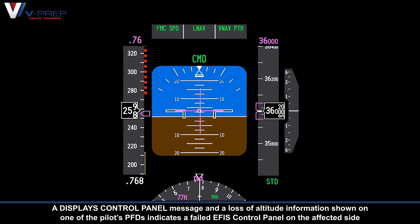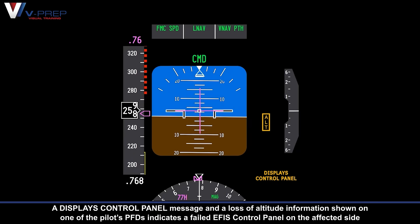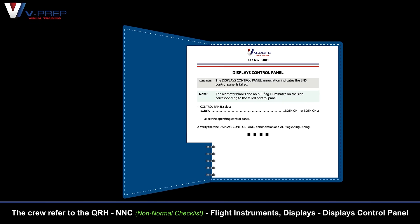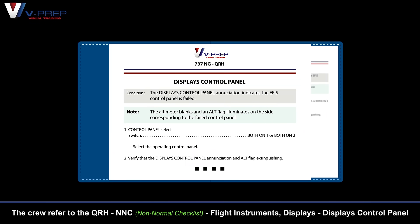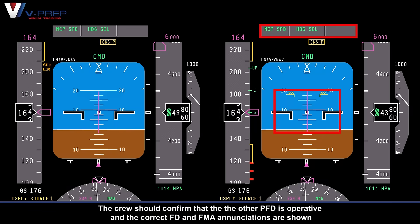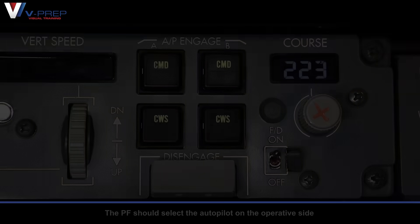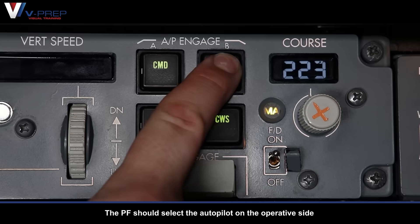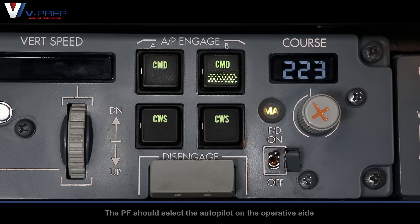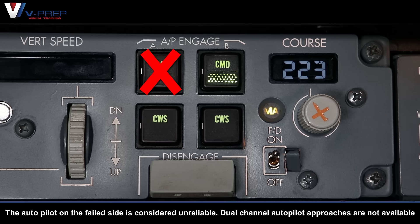Display control panel. A display control panel message and a loss of altitude information shown on one of the pilot's PFDs indicates a failed EFIS control panel on the affected side. The crew refer to the QRH NNC flight instruments displays control panel. The crew should confirm that the other PFD is operative and the correct flight director and FMA annunciations are shown. The pilot flying should select the autopilot on the operative side. The autopilot on the failed side is considered unreliable.